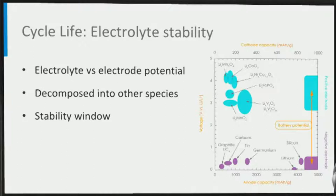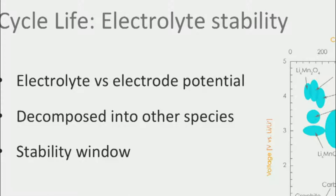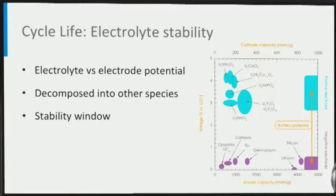Next we consider potential causes of the finite cycle life of batteries — that is, the limited number of times they can be charged and discharged. The electrolyte in a battery is exposed to the reduction and oxidation potentials of the two electrodes. If the electrolyte is oxidized or reduced by these potentials, this implies that the electrolyte is decomposed into other species, which may be insoluble in the electrolyte, often bonding lithium in such a way that it is no longer active. As a consequence, some capacity is irreversibly lost and part of the electrolyte is decomposed, which are major factors that cause a finite battery cycle life.